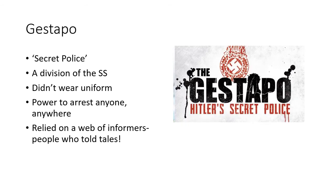Perhaps most feared was the Gestapo, which was Hitler's secret police, meaning they weren't uniformed — they just looked like everyday Germans. They were a division of the SS as well. They had the power to arrest anyone, anywhere. They relied on a web of informers — people who told tales, people who grassed on their neighbours and friends for being communist sympathizers or socialists, or for possessing a pamphlet critical of Hitler. Everybody in Germany was afraid of the Gestapo, partly because they were the secret police — no one knew who they were. It could be the person next to you on the train or the bus. It could be anyone — the person who overhears your conversation in a restaurant and then suddenly you're arrested. That probably explains the fear that the Gestapo instilled in German people.